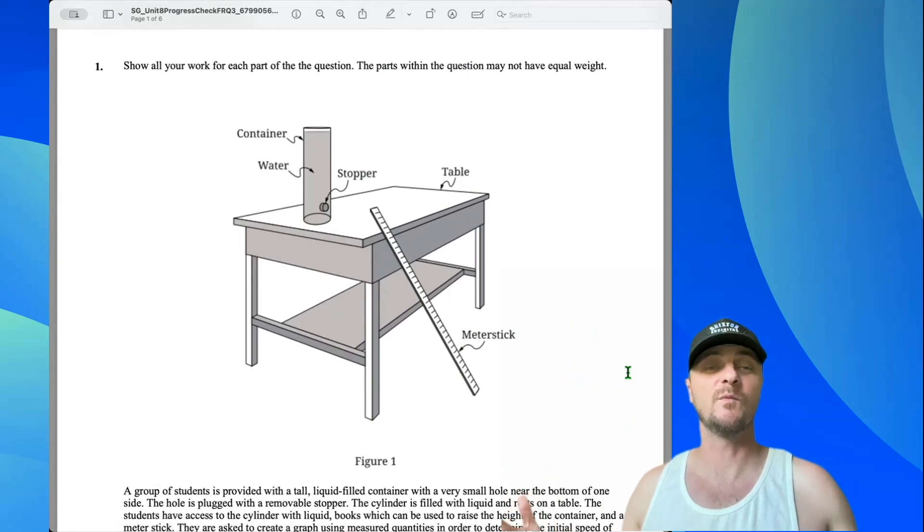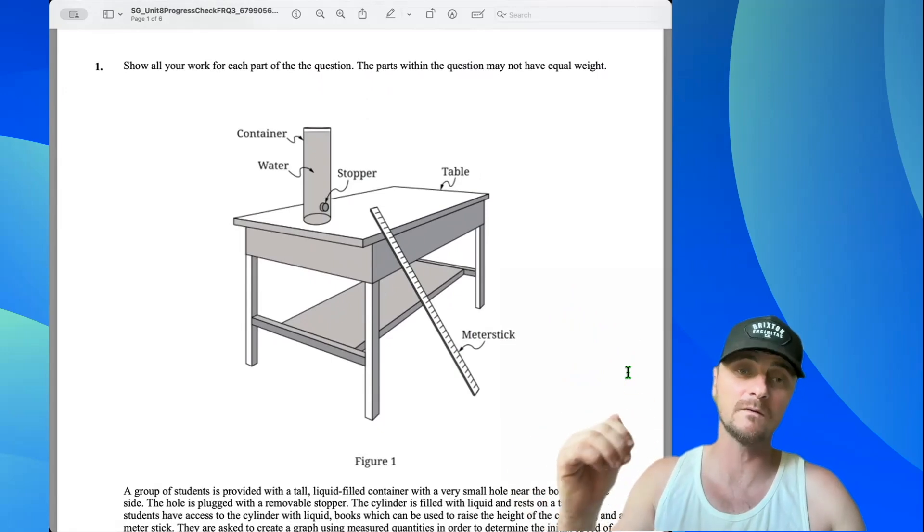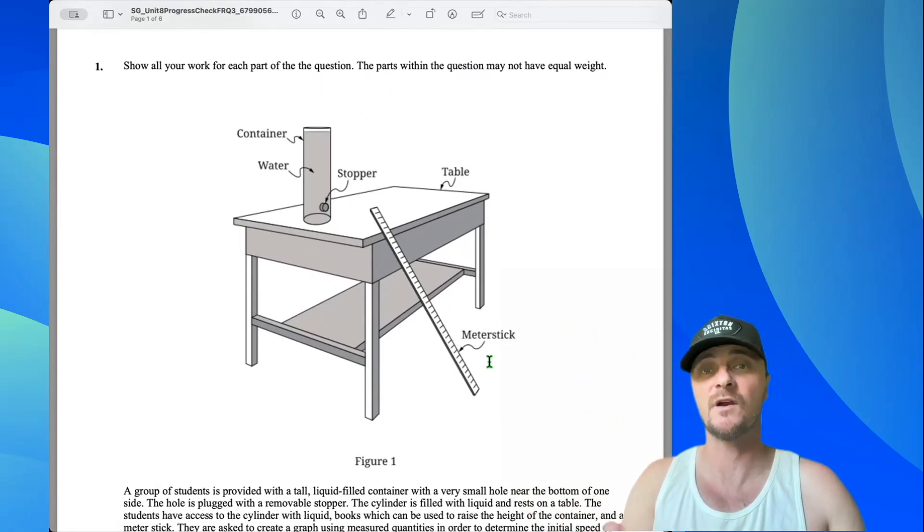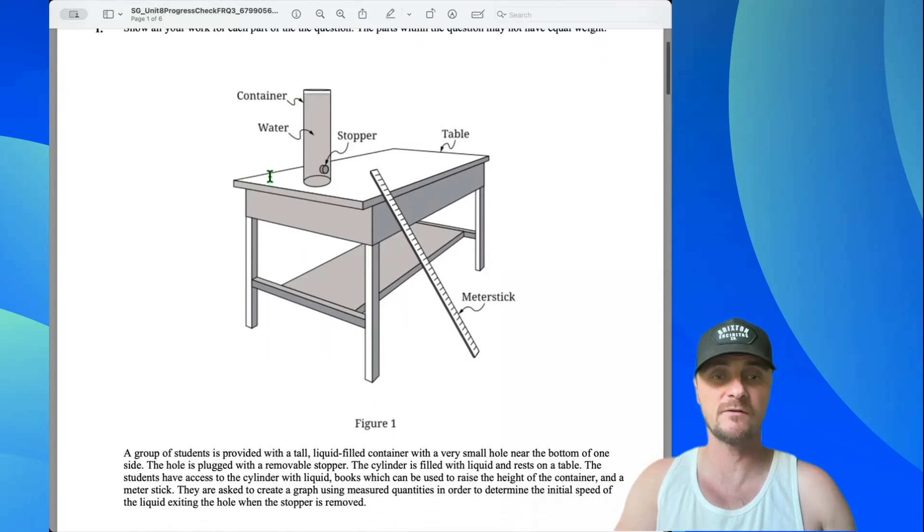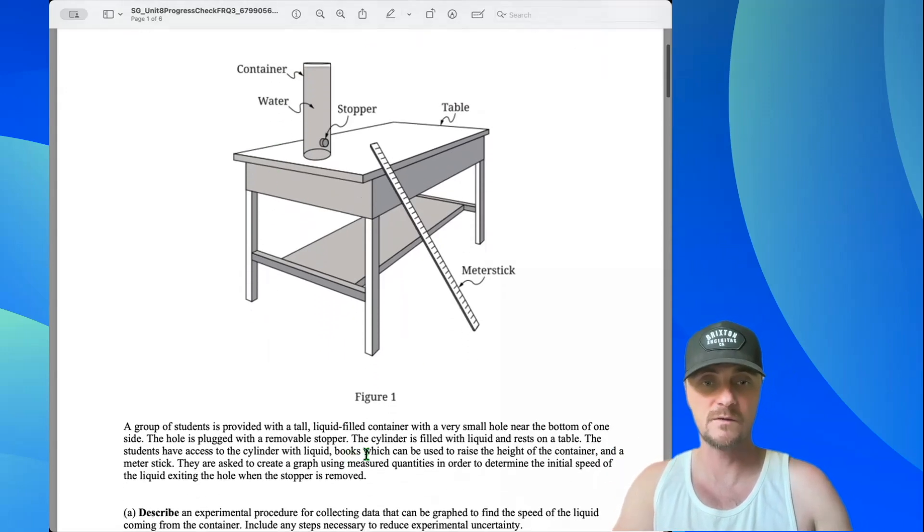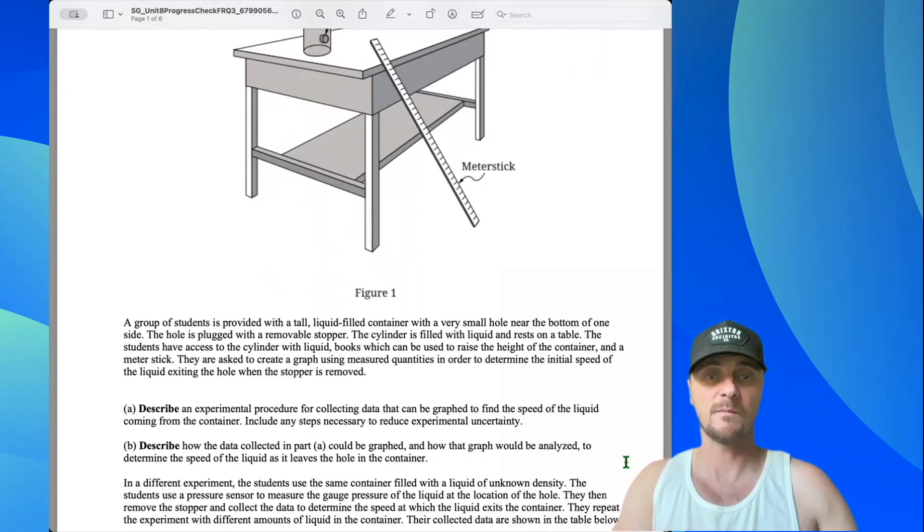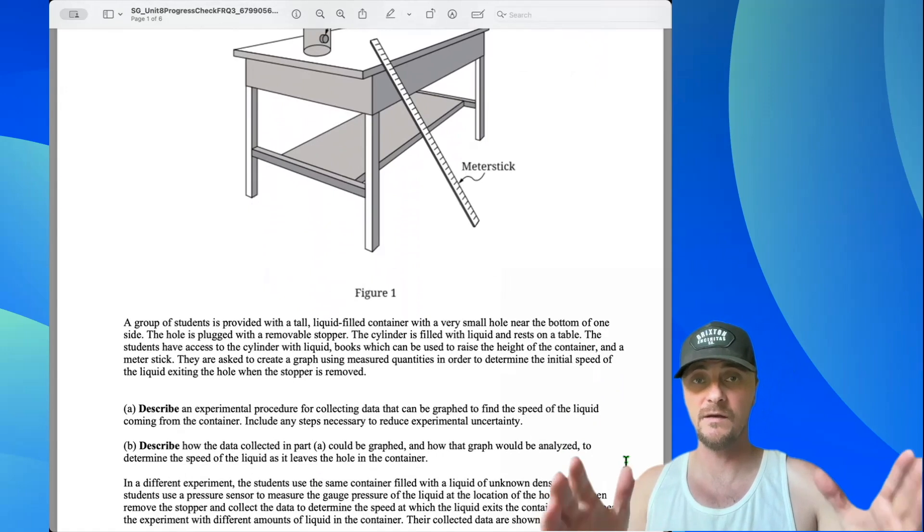And this is our system. We've got a container with water. It has a stopper at the bottom. We can definitely remove that stopper and let water shoot out. We have this meter stick to measure heights and distances. We are going to leave the container on top of the table, but we also have books which can be used to raise the height of the container.